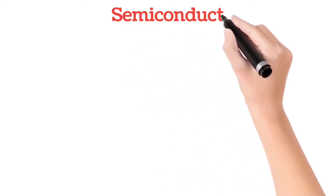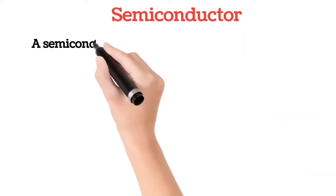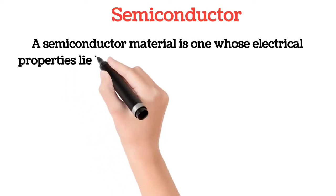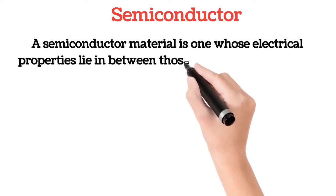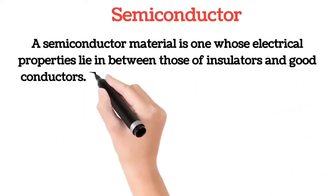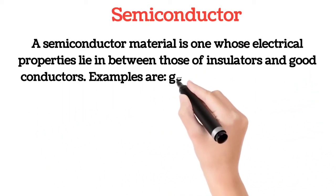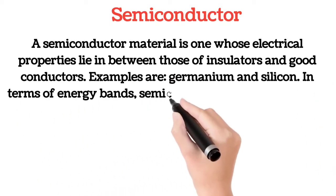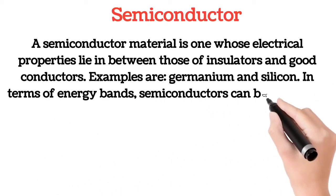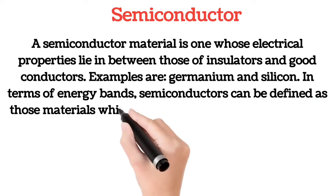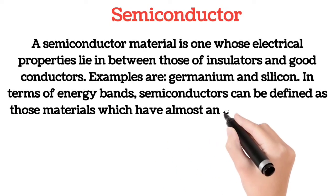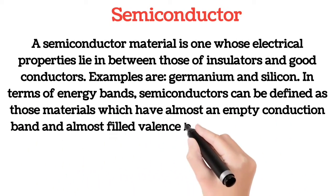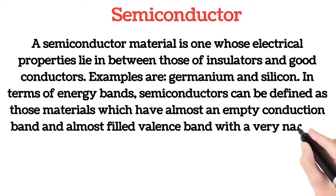A semiconductor material is one whose electrical properties lie in between those of insulators and good conductors. Examples are germanium and silicon. In terms of energy bands, semiconductors can be defined as those materials which have almost an empty conduction band and almost filled valence band, with a very narrow energy gap of the order of one electron volt separating the two.